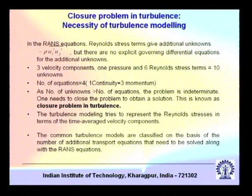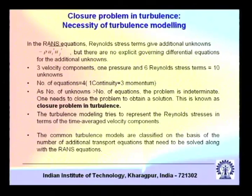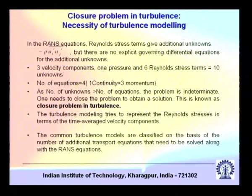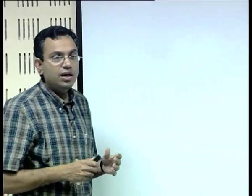This closure problem tells us why turbulence modeling is required: we have more unknowns than equations after Reynolds averaging, and those unknowns need to be closed with suitable equations that must be mathematically modeled. Turbulence modeling tries to represent the Reynolds stresses in terms of the time-averaged velocity components. Common turbulence models are classified by the number of additional transport equations they require.